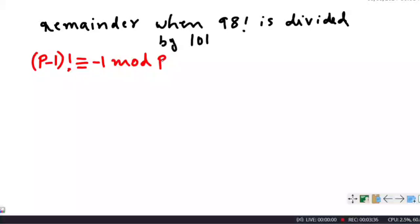101 is a prime number, so we can take p = 101. Then p - 1 factorial, that is 101 - 1 factorial, equals 100 factorial.